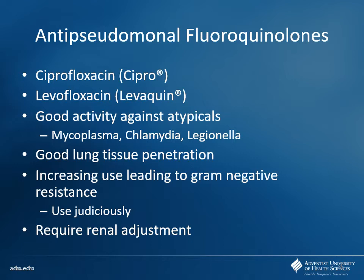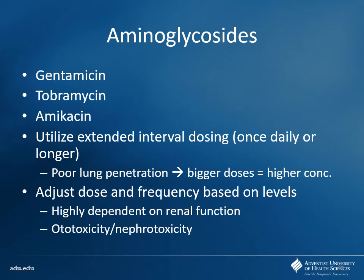Fluoroquinolones — try to use these judiciously whenever you can. They're easier to dose than something like an aminoglycoside because you don't have to do therapeutic drug monitoring. However, resistance is always a concern. For aminoglycosides, any of them can be used. Nowadays we use once-daily dosing so we can give a big dose one time a day. We'll check levels — usually a trough to make sure it's undetectable, around the third or fourth dose or so. Be careful because remember what the main toxicities are: oto and nephrotoxicity. If the patient already has nephrotoxicity to begin with, you can just exacerbate that further.